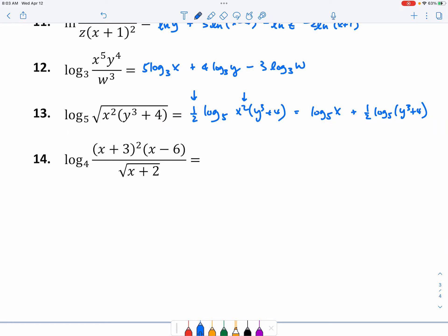And the last one, number 14, it's going to be 2 log₄(x + 3) + log₄(x - 6) - 3/2 log₄(x + 2). Again, make sure you use parentheses for all these little terms right here. And if you do that, your job is done. There's nothing else you can do with the terms in the parentheses. So that is it.